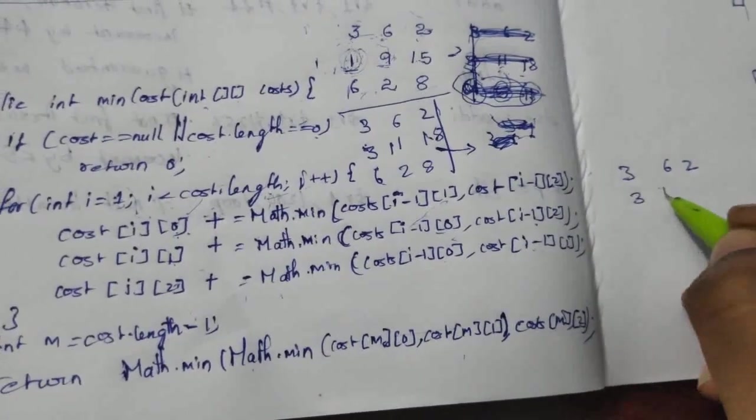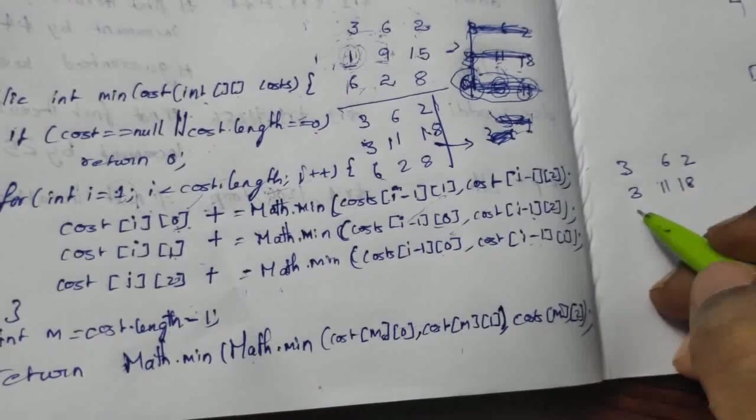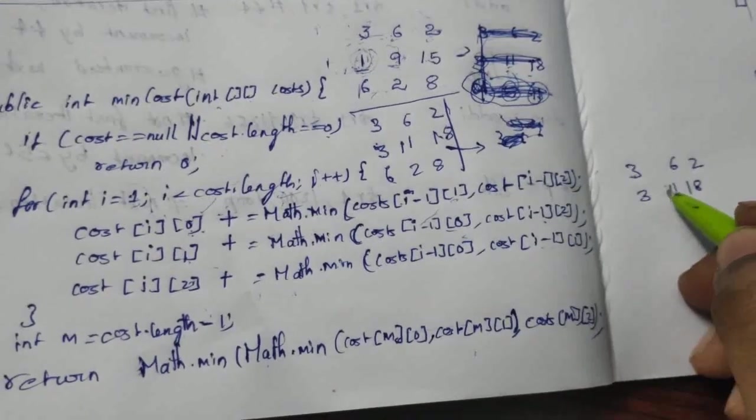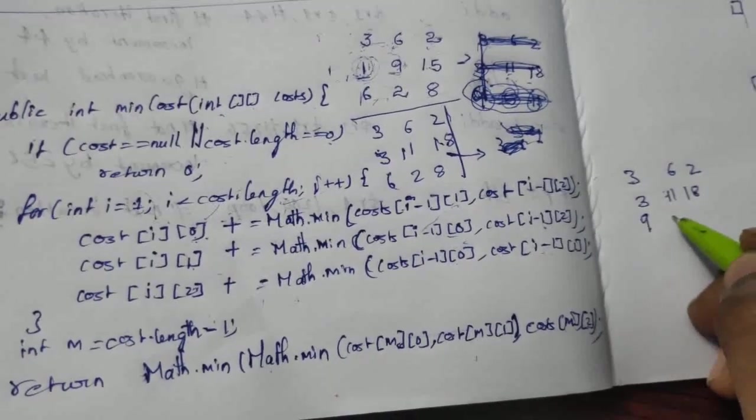3, 11, 18. So 6 plus minimum of 3 or 11. 3 is minimum, going to be 9.